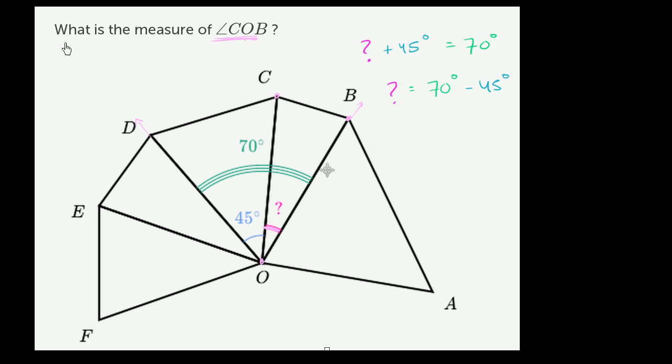So what's this going to be? Well, if it was 70 minus 40, we'd get to 30. But then we have to subtract another 5. So it's going to be 25 degrees.